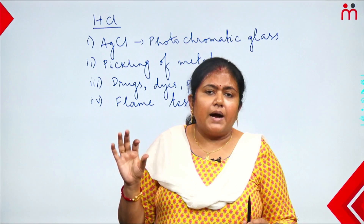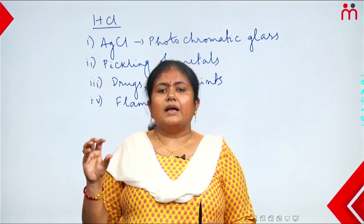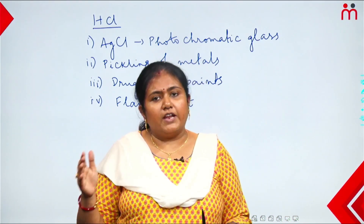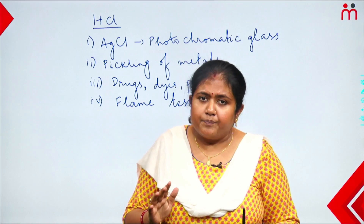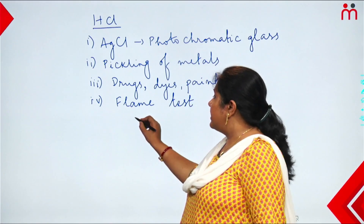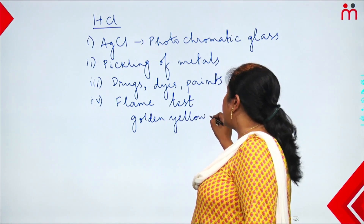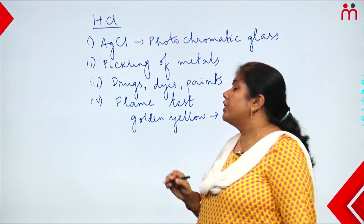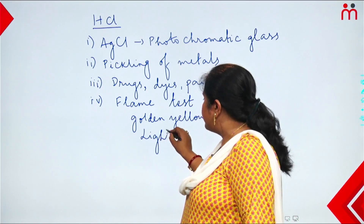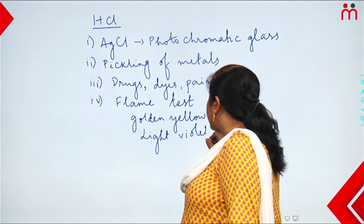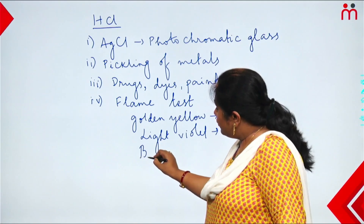We generally burn the flame in the salt. According to which metal is present in the salt, the color of the flame will change. If sodium (Na) is present, the flame test will show golden yellow color. If potassium (K) is present, the flame test will show light violet color.